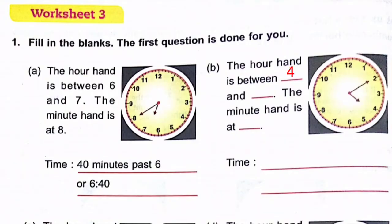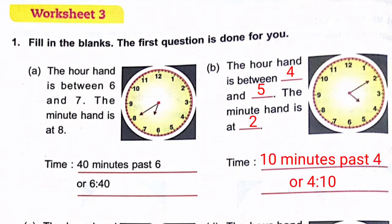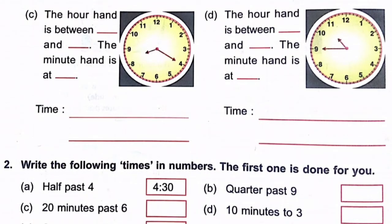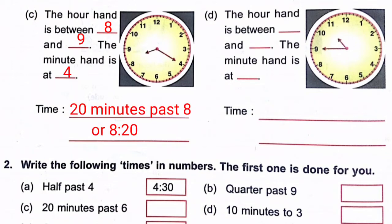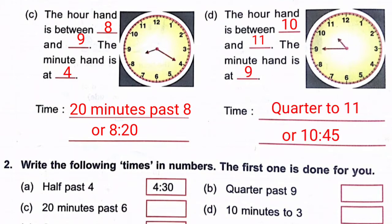Exercise B: When the hour hand is between 4 and 5 and the minute hand is at 2, the time is ten minutes past four — 4:10. When the hour hand is between 8 and 9 and the minute hand is at 4, it is twenty minutes past eight — 8:20. When the minute hand is at 9 and the hour hand is between 10 and 11, it is quarter to eleven — 10:45.